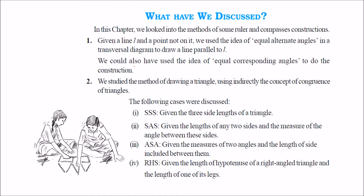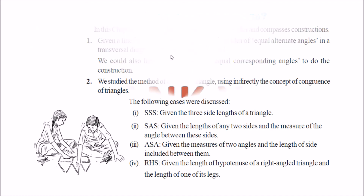So, what we have discussed in this chapter: we can draw parallel lines by making corresponding angles equal or interior opposite angles equal. We can construct triangles using SAS, SSS, ASA, and RHS criteria. Thank you so much — this is about practical geometry.